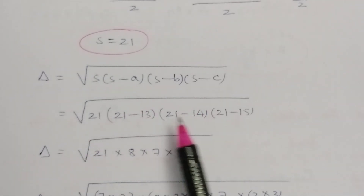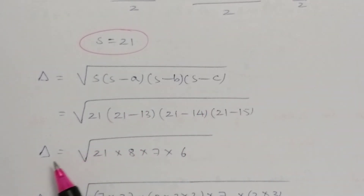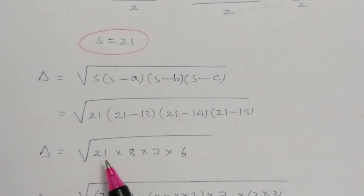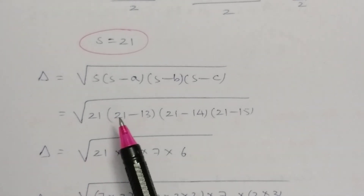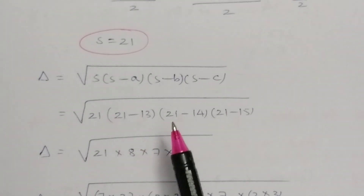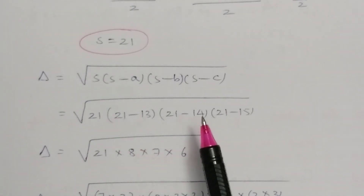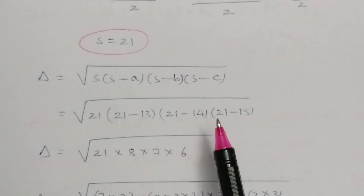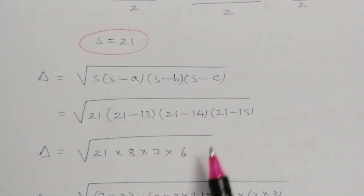Delta, the area of the triangle, equals the square root of S(S−a)(S−b)(S−c) — this is Heron's formula. Substituting: √(21 × (21−13) × (21−14) × (21−15)) = √(21 × 8 × 7 × 6). After substitution: 21 − 13 = 8, 21 − 14 = 7, 21 − 15 = 6.